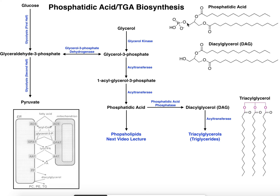The third oxygen is bound to a phosphate. In the case of phosphatidic acid, it just has a hydrogen on it. But in other phospholipids — the more common ones we see in membranes — this hydrogen will be replaced with something called a head group. We're going to look at the synthesis of those phospholipids in the next video. Putting on different head groups like choline, ethanolamine, or serine will require different short metabolic pathways.